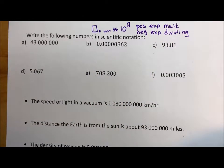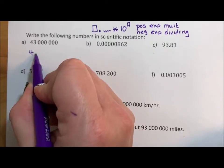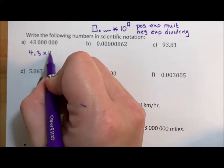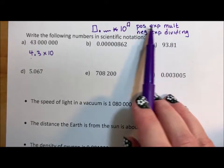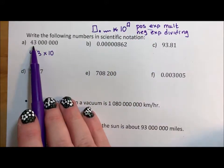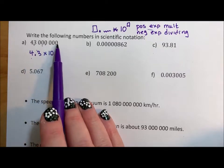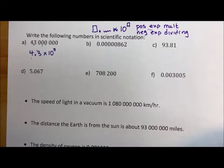The first non-zero number is 4, decimal point 3, I don't need all the rest of the zeros. Times 10. To get the 4.3 back to 43 million, I would have to multiply, so I want a positive exponent, and I'd have to multiply by 10 one, two, three, four, five, six, seven times. So I would multiply by seven 10 times, so that's my exponent, 7.